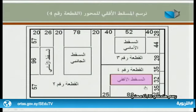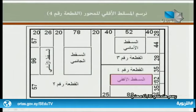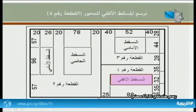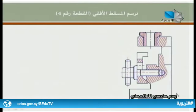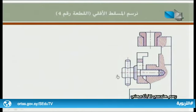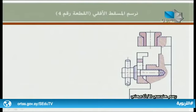باعتبار أن طول المسقط الأفقي للقطعة رقم 4 هو 88 مليمتر وارتفاعه 32 مليمتر، فإننا نحسب المسافات لتكون 25 مليمتر على اليمين واليسار و35 مليمتر في الأعلى والأسفل. المطلوب رسم المسقط الأفقي للقطعة رقم 4، وكما يبدو في الرسم التجميعي فإن القطعة رقم 4 تظهر في المسقط الرأسي أو الأمامي، أي أن محور الثقب شاقولي في هذه الوضعية.